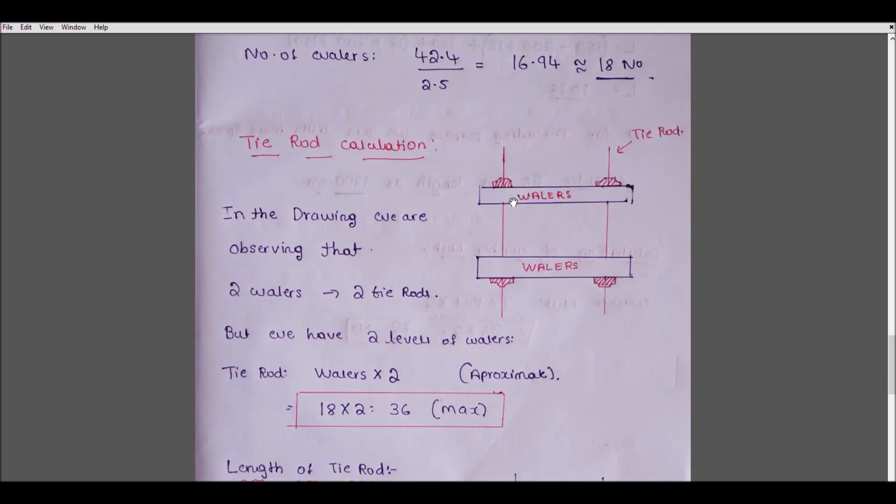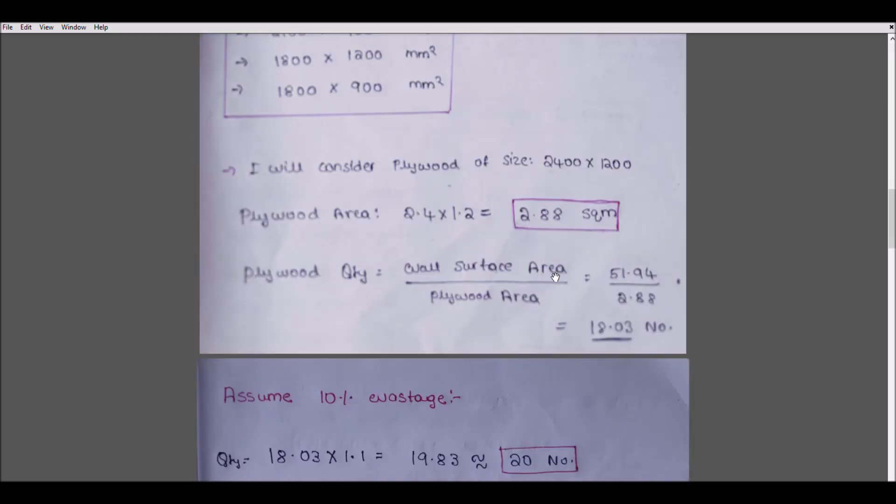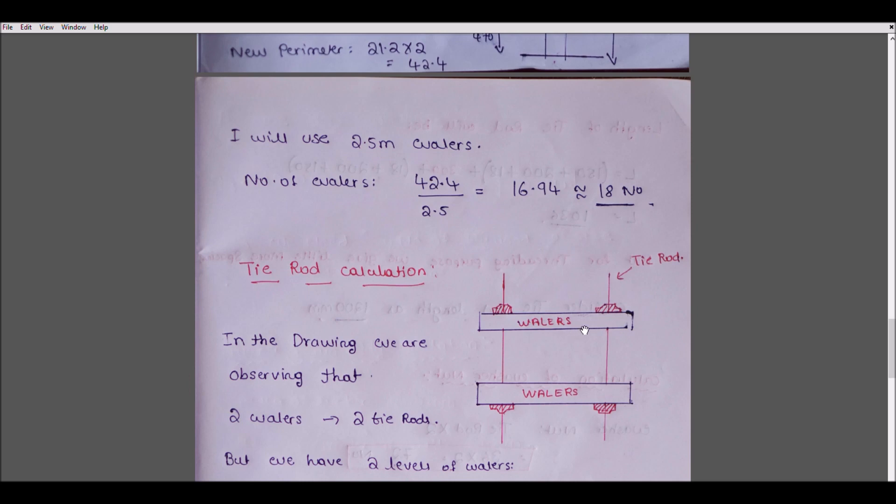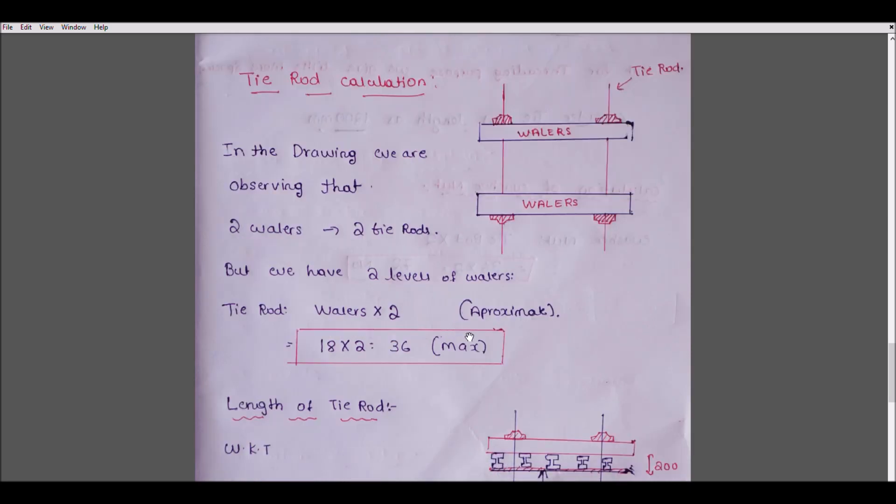Next is tie rod calculation. In this tie rod calculation, these are the wailers, then a timber beam will come, then our 300mm thick wall. For safety purposes, I know the tie rod spacing is 1500mm, and our wailer size is 2.5 meters. So for one 2.5-meter wailer, I consider 2 tie rods. We have 2 levels, so multiply by 2, giving 36 tie rods maximum. It might be less when you draw in AutoCAD.